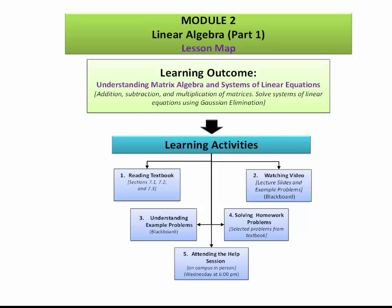Now, as you can see here, there are 5 components of learning activities. Number 1, reading sections 7.1, 7.2 and 7.3 from your textbook.